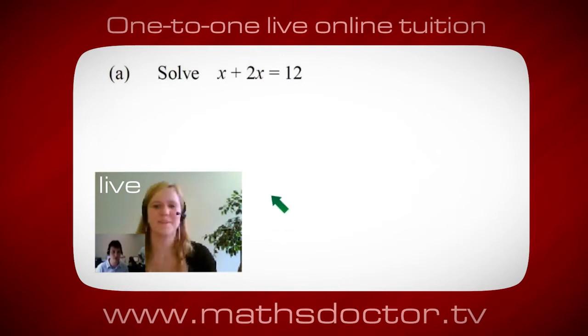Okay, so let's have a look at this one: solve x plus 2x equals 12. So what do you think you do first? Okay, well I want x on its own, so I would put x equals 12 minus 2x.